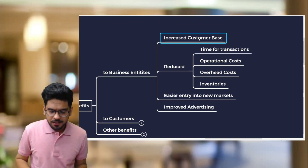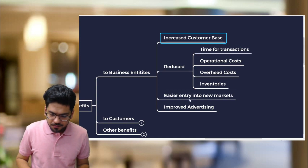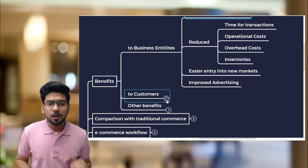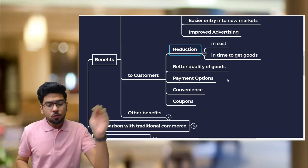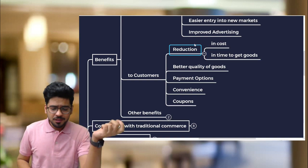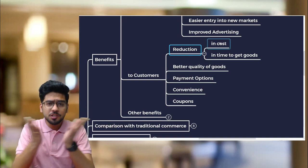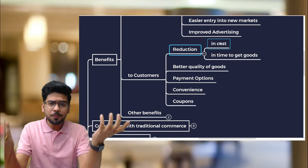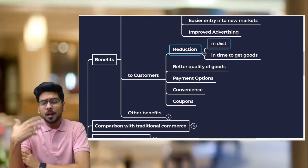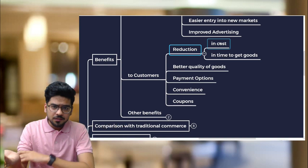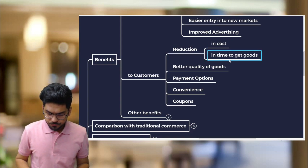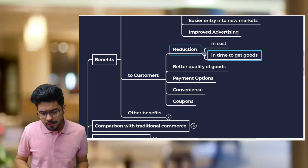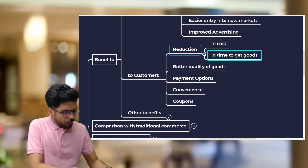In total, there are seven benefit points for business entities. For customers, buying online results in cost reduction — products are somewhat cheaper due to competition and the absence of middlemen. There is also reduction in time to get goods, meaning goods are received faster.